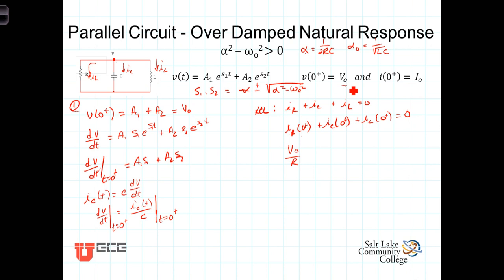So i_R(0⁺) = V₀/R. For the inductor, i_L(0⁺) equals the current right before switching because you cannot instantaneously change current in an inductor. Thus i_L(0⁺) = I₀. Since i_R(0⁺) + i_C(0⁺) + i_L(0⁺) = 0, we can solve for i_C(0⁺) = -(V₀/R + I₀).